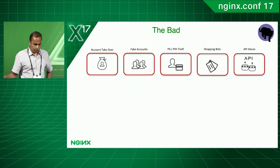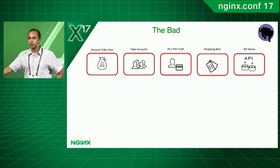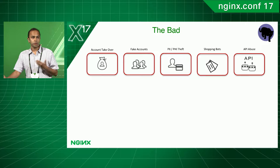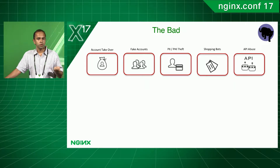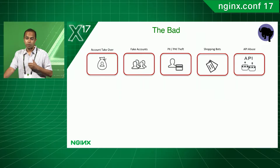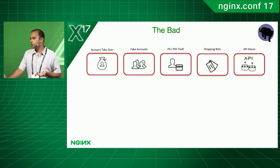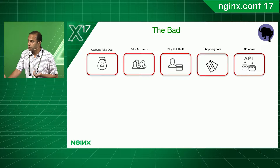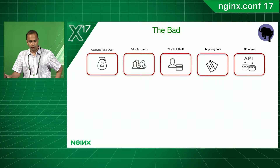The last bad-bot type is more generic: API abuse. If your website has APIs exposed for customers — for your mobile app or even without authentication — these can be misused by competitors or bad actors to scrape pricing information, inventory information, or customer location data.